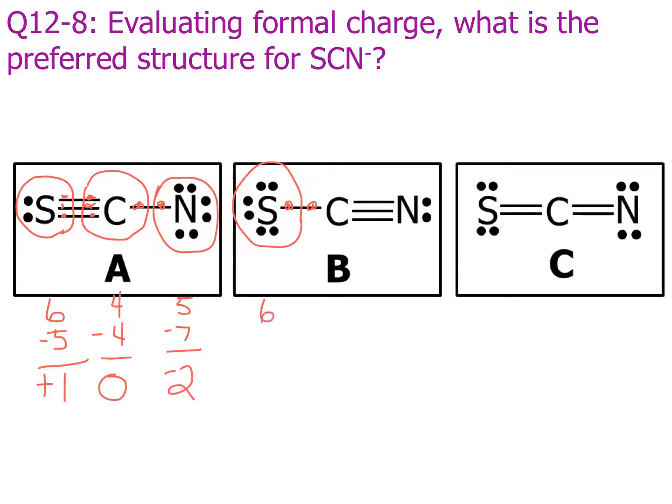Sulfur's in group six. There are seven in the circle. Sulfur is minus one. Carbon has four in the circle, so zero. And nitrogen has five in the circle, and it's group five, so zero formal charge.